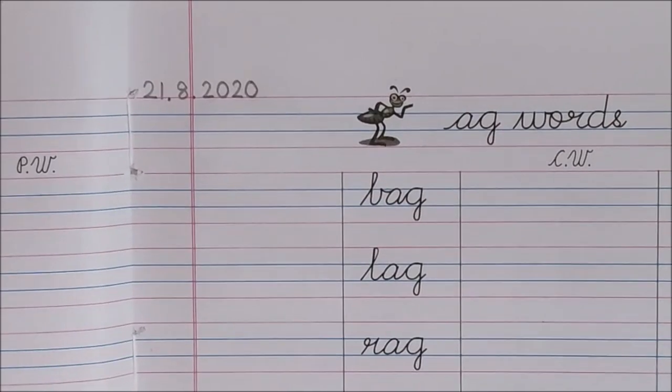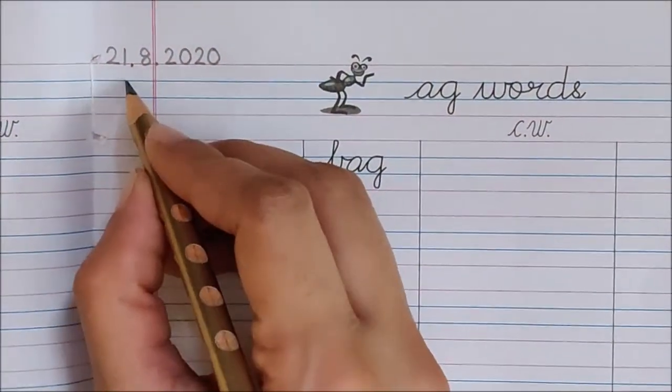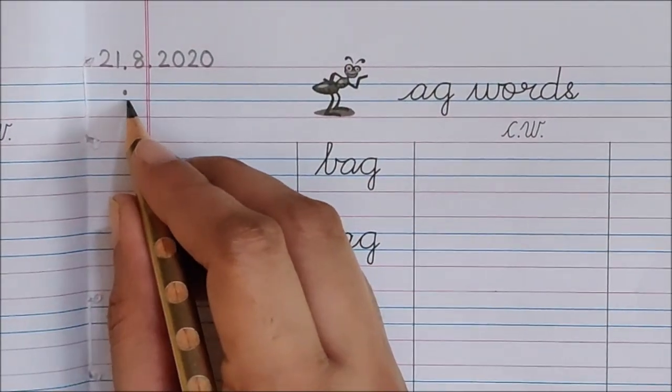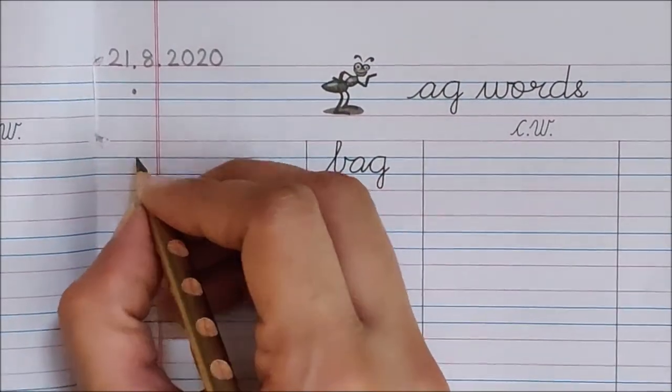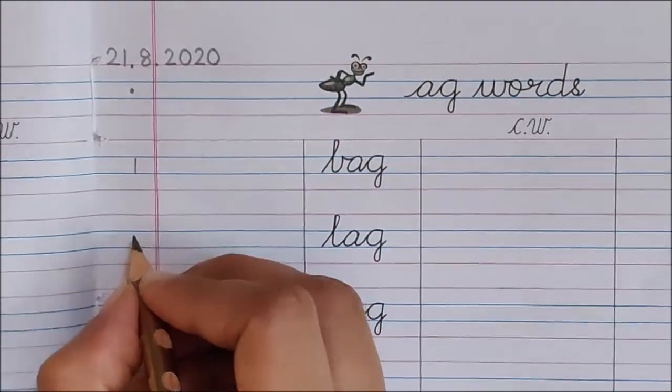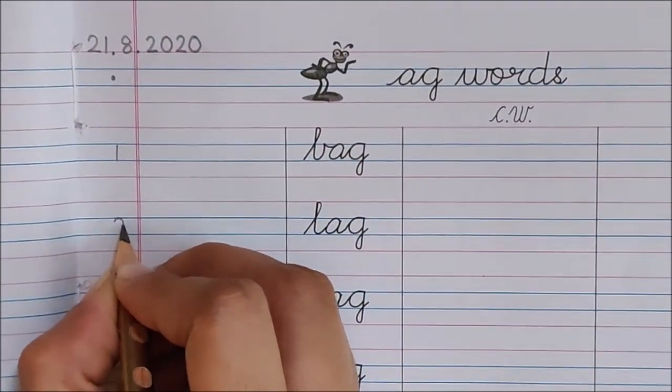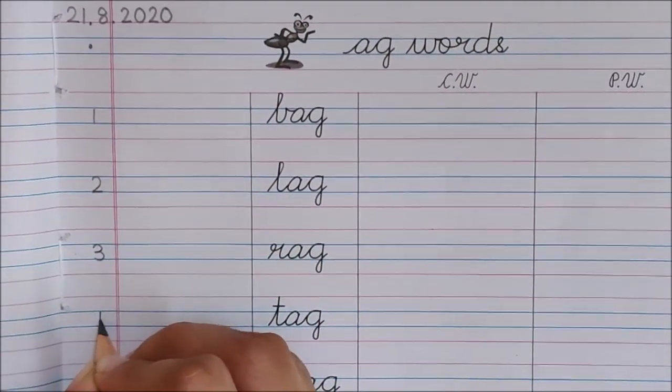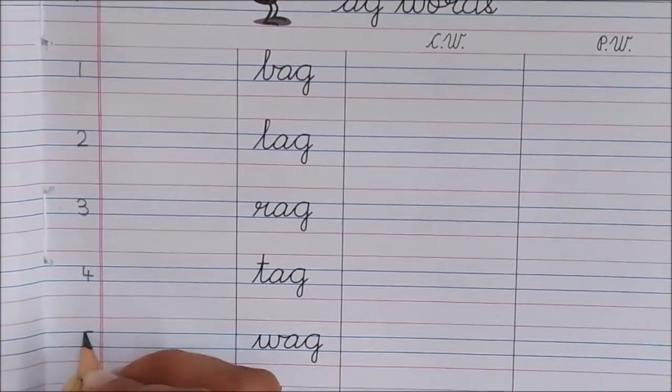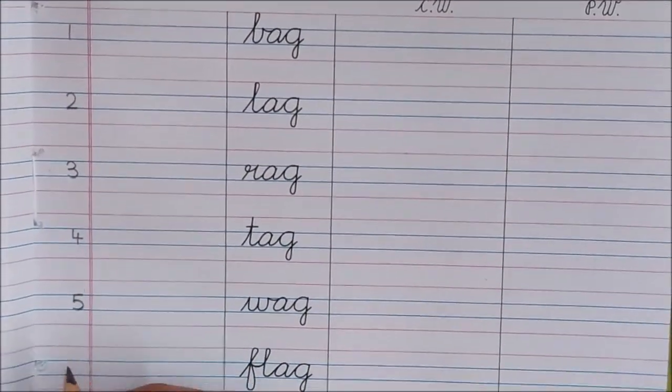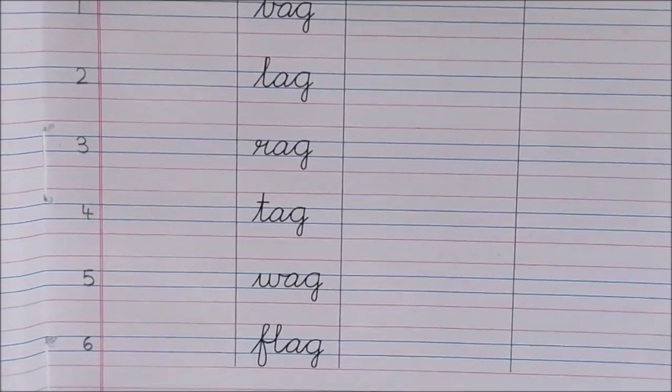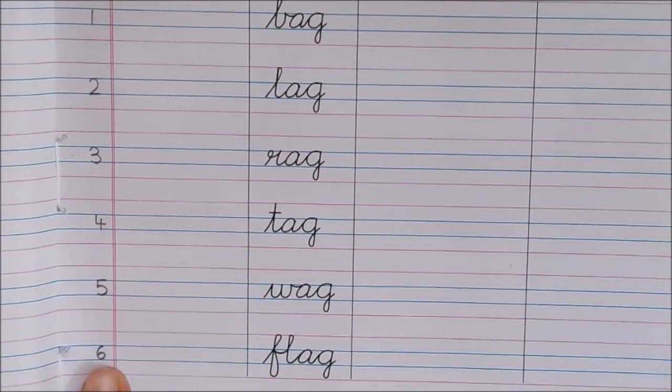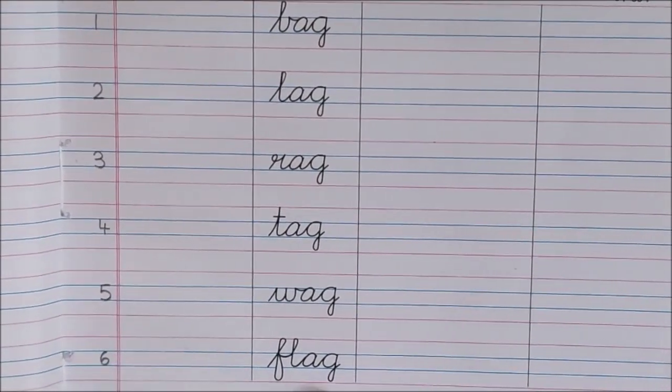Okay children. Now children, below the date put a dot. Now below the dot in the first margin write down here 1. Then write down 2, 3, 4, 5, 6. Okay children, we have written 6 here because we have 6 words on this page.